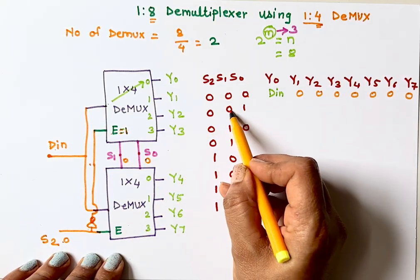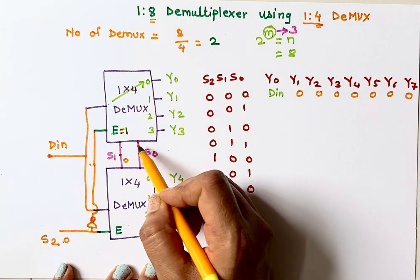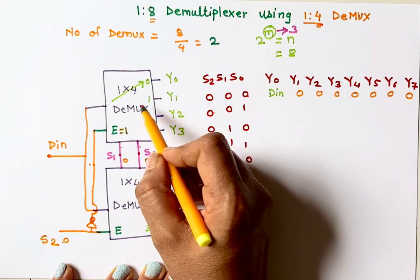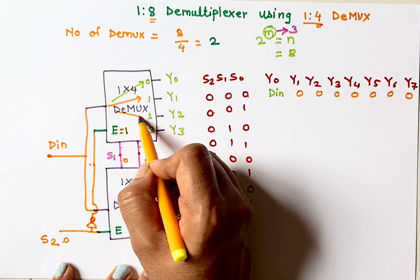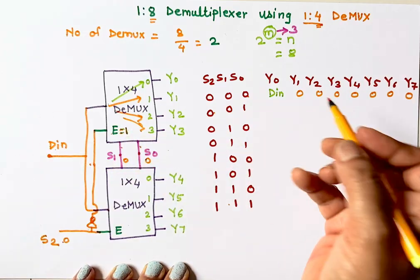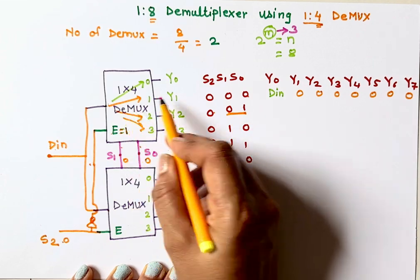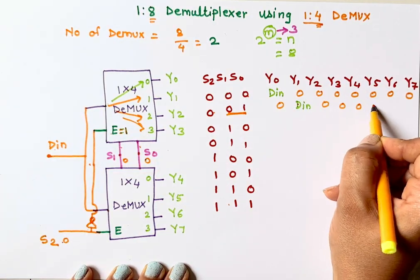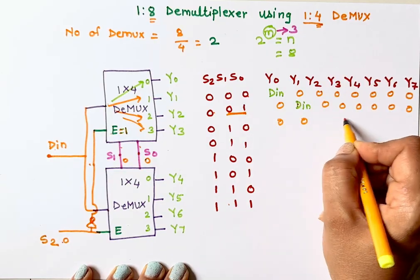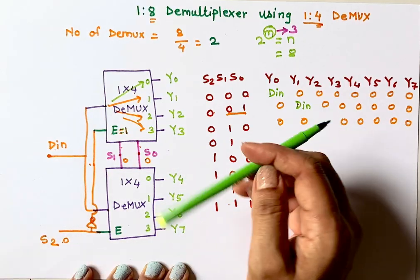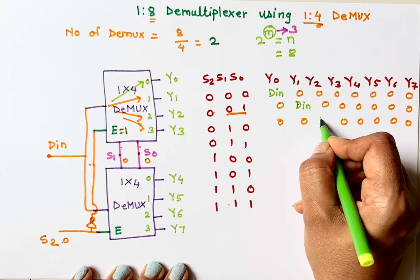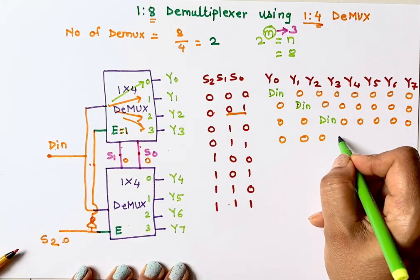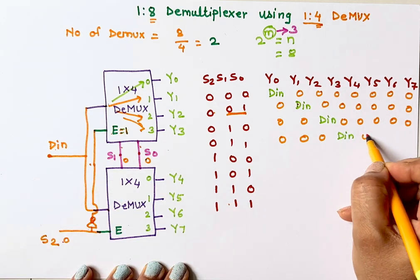Continuing through the first 4 conditions with S2 still 0: when S1=0, S0=1, the input goes to Y1. For S1=1, S0=0, it goes to Y2. For S1=1, S0=1, it goes to Y3. So for all first 4 conditions, the first demultiplexer is selected, routing the data input to Y0 through Y3 respectively, while all other outputs remain 0.